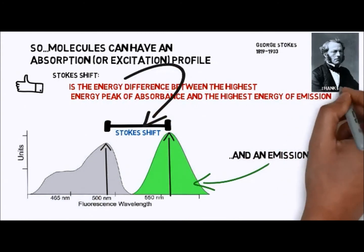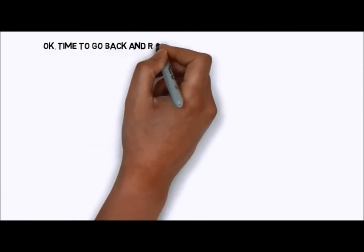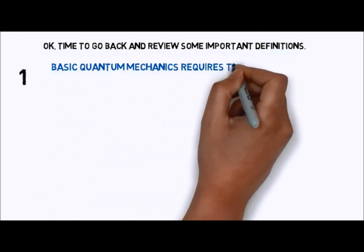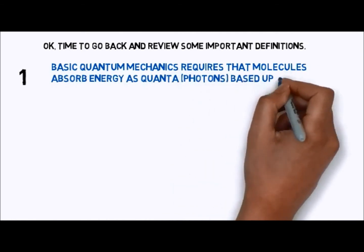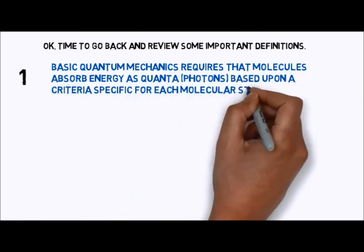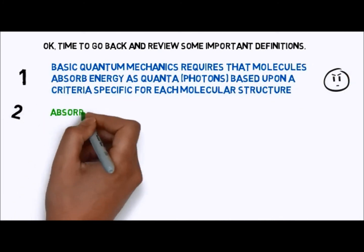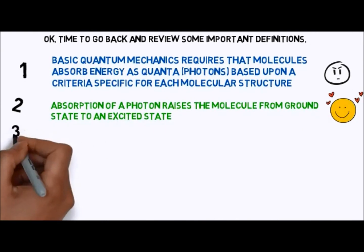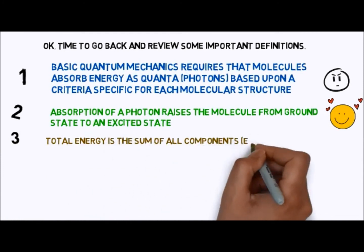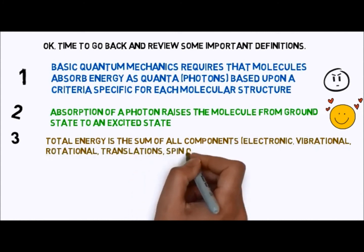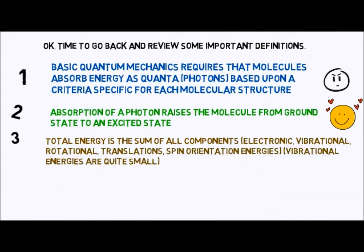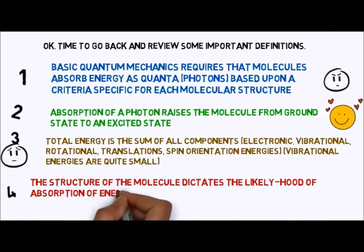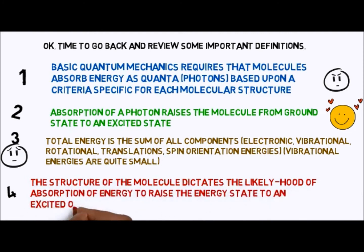Time to review some important definitions. One, basic quantum mechanics requires that molecules absorb energy as quanta, or photons, based upon criteria specific for each molecular structure. Two, absorption of a photon raises the molecule from ground state to an excited state. Three, the total energy is the sum of all components: the electronic, vibrational, rotational, translational, and spin orientation energies, even though vibrational energies are quite small. Four, the structure of the molecule dictates the likelihood of absorption of energy to raise the energy state to an excited one. If you can grasp these four basic principles, it'll take you a long way towards understanding fluorescence.